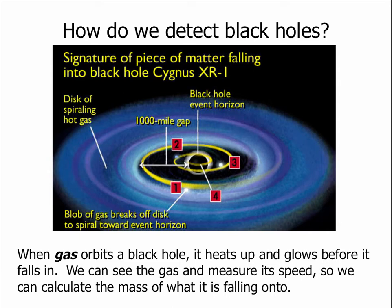This lets us measure the strength of gravity, so we can measure the mass of what it's falling onto. And we can learn quite a bit about a black hole, even though once stuff falls into the black hole itself, it vanishes. This is how we detect black holes. This is how we've been able to prove that they exist.